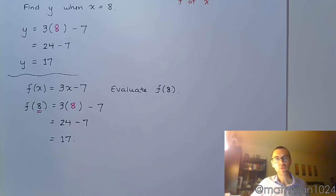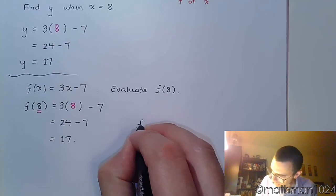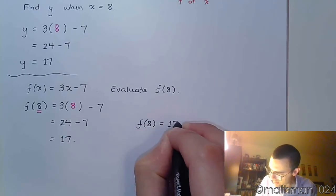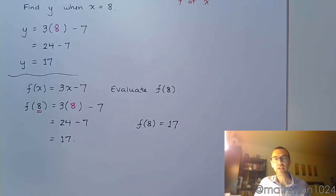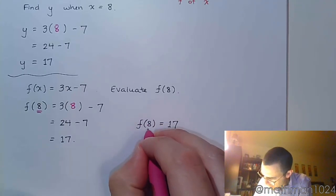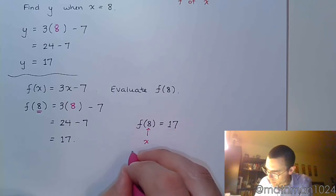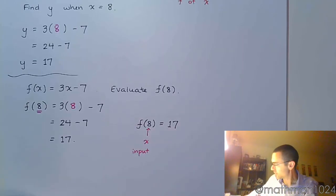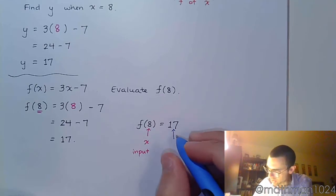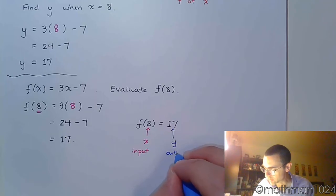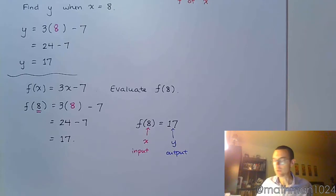So what does it mean to evaluate f of 8? Well, this means that f of 8 is equal to 17. So to make sure we understand, this is basically our x, which is going to be our input value. And this number here is really our y value. So if you were making an ordered pair, you can clearly see your x and your y. So x is your input, y is your output.